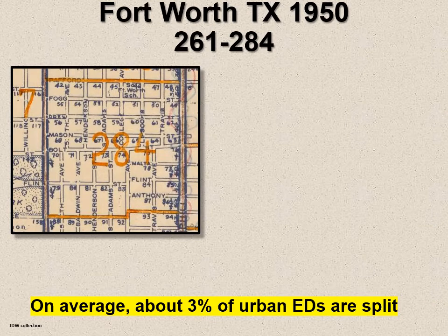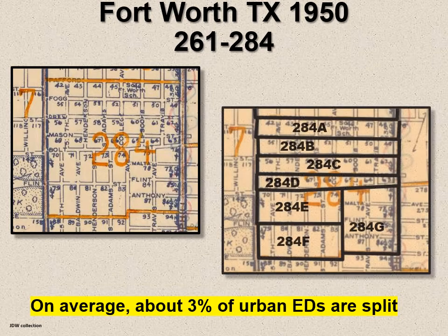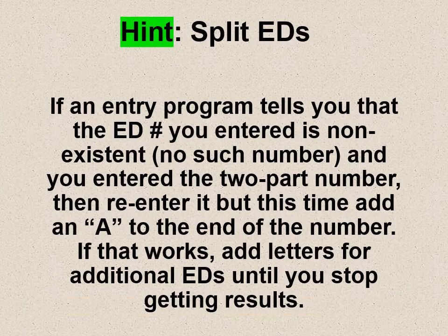Fort Worth, Texas is an unusual situation. On average, about 3% of urban maps will have split EDs. But Fort Worth had some sort of program that hired teachers to do the census and needed many enumeration districts. Approximately one out of two EDs in Fort Worth, Texas are splits. So 284 is split seven different ways. I pity the researcher who doesn't know this and is going to look for an address in Fort Worth without knowing about the high number of splits.